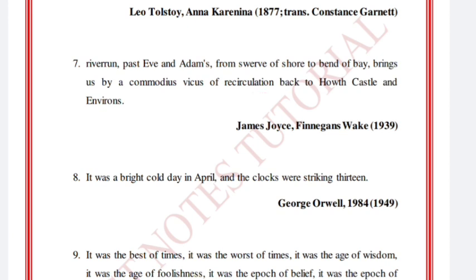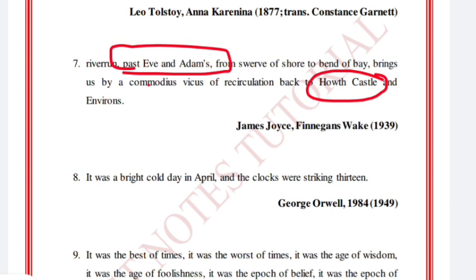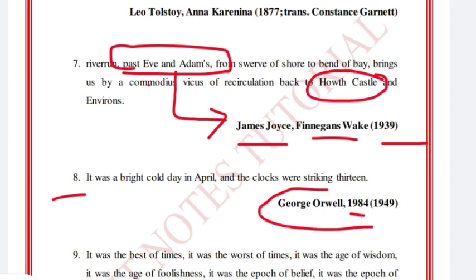You will take the keyword 'house castle' from that opening. James Joyce, Finnegans Wake, 1939. 'It was a bright cold day in April and the clocks were striking thirteen.' This is George Orwell, 1984, published in 1949.